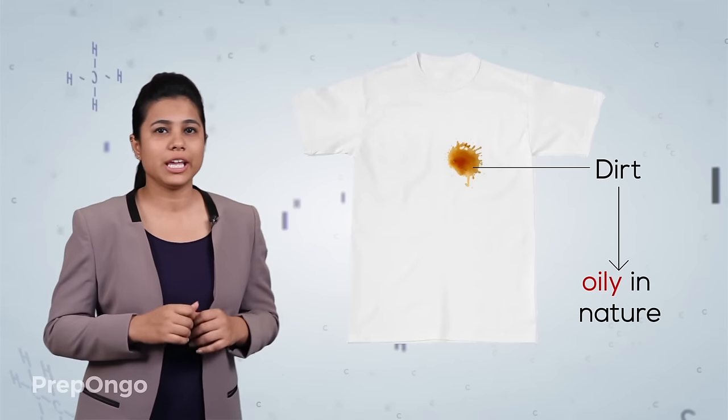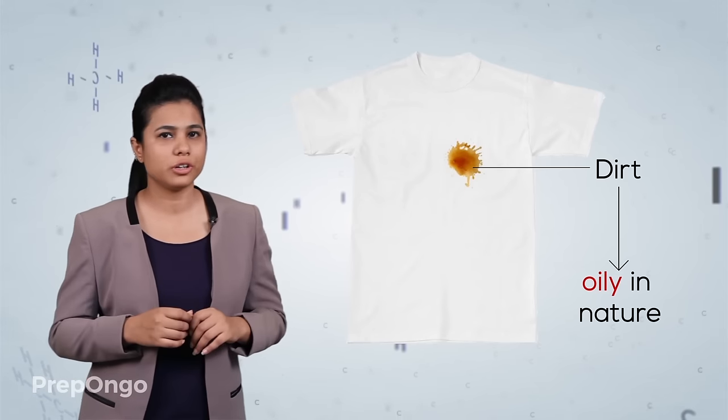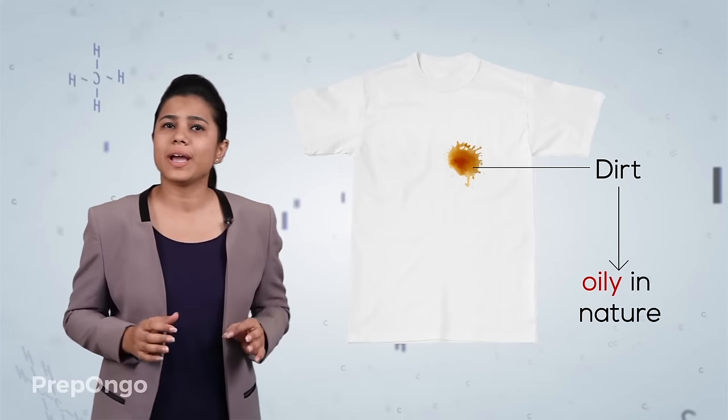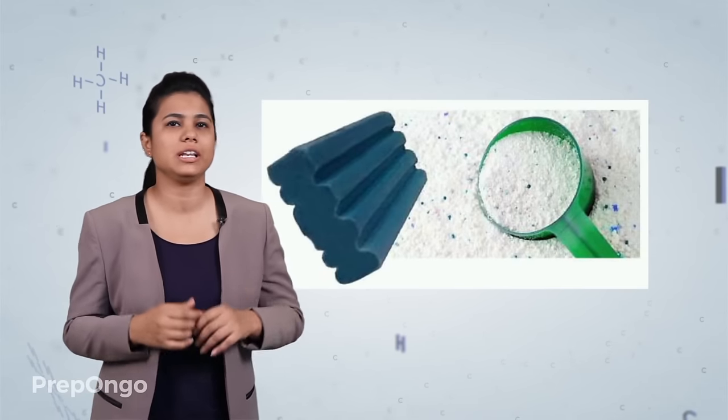The dirt is oily in nature and we know that the oil does not dissolve in water. That is why simply rinsing our clothes with water does not remove the dirt and we need an external cleansing agent such as soaps and detergent for cleaning our clothes. Let's study the structure of soaps and then detergents and try to understand how they work.